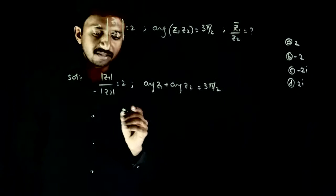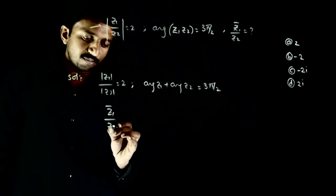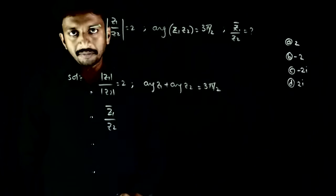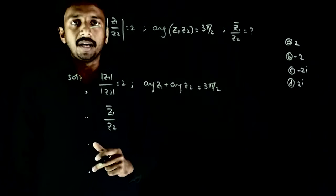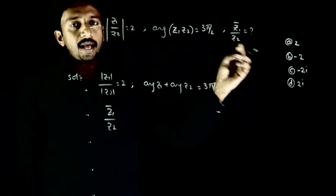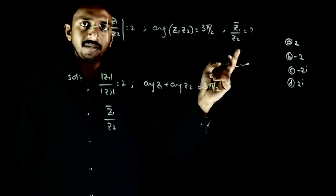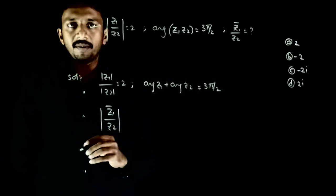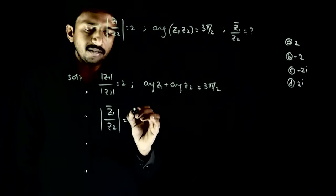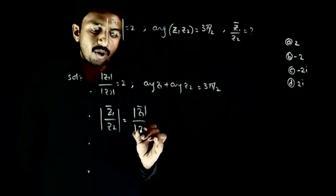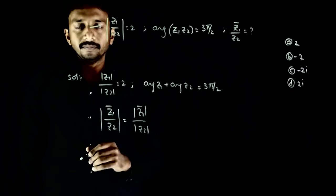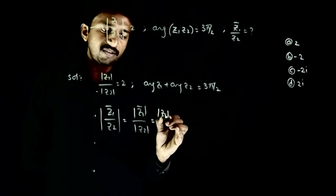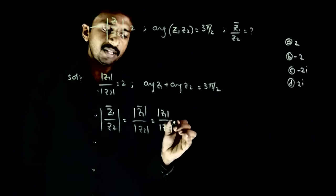We are asked to analyze z1 bar by z2. First, let's find its modulus. Modulus of z1 bar by z2 is nothing but mod z1 bar by mod z2. Since mod z1 bar is the same as mod z1, this equals mod z1 by mod z2, which is equal to 2.